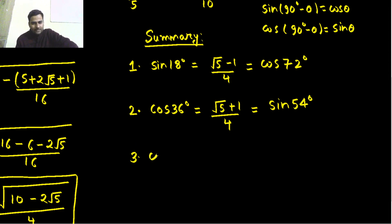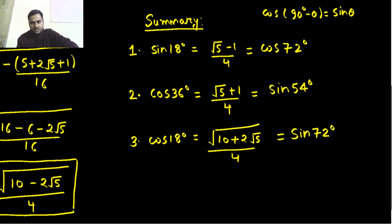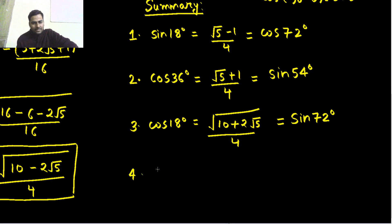Cos of 18 degrees value? This came out to be √(10+2√5) divided by 4. Again, using complementary angle result, I can say this is same as sin 72 degrees. And today we derived sin 36 degree value which came out to be similar to that cos 54 degrees.